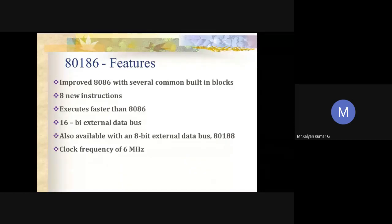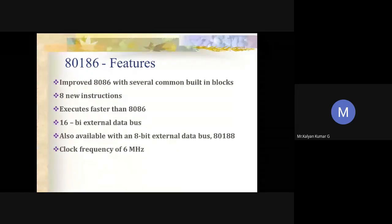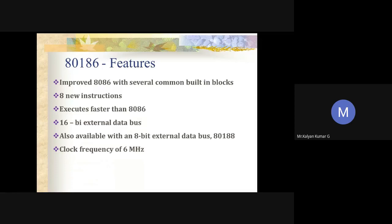Similar to 8086, the 80186 also has a 16-bit external data bus. It is also available with an 8-bit external data bus, in which case it is named the 80188 processor. The basic clock frequency of 80186 starts at 6 megahertz, which is higher than the 8086's 5 megahertz, meaning it works a little bit faster than 8086.